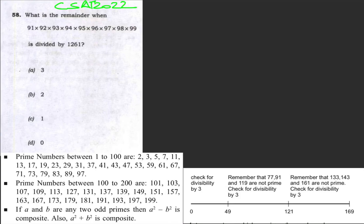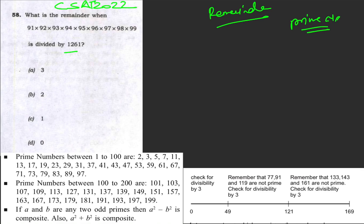Hello everyone, welcome to Optimize. We are doing the CSET questions from a previous year series. The question is: what is the remainder when this number is divided by 1261? This question is related to the remainder numbers concept and prime number concept. You need to know what a prime number is and how to find it. We will start with that — 1261 can be factorized.